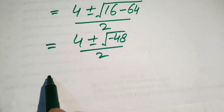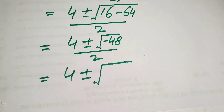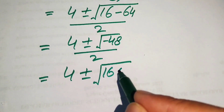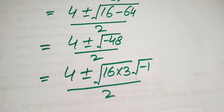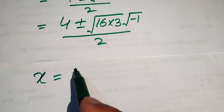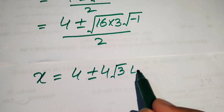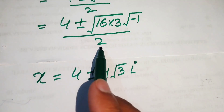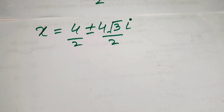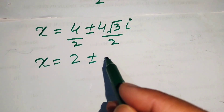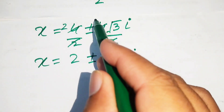We rewrite minus 48 as minus 1 times 16 times 3 and separate the square roots. The square root of 16 is 4, and the square root of minus 1 is i (iota). Dividing through by 2, we get x equals 2 plus or minus 2√3·i.